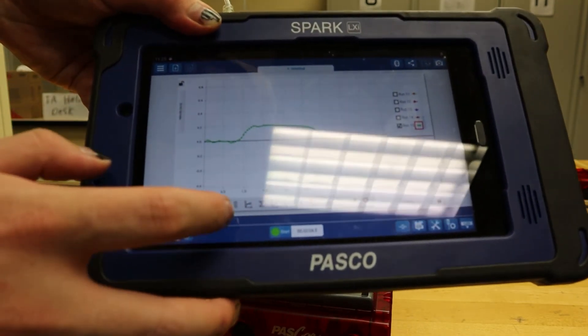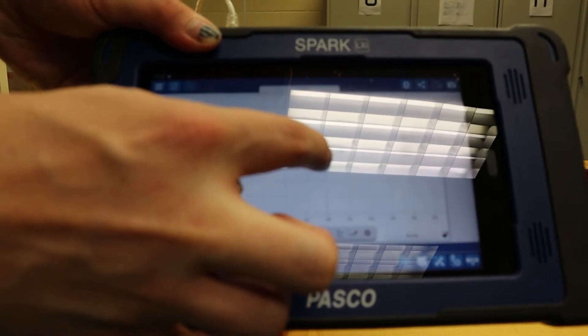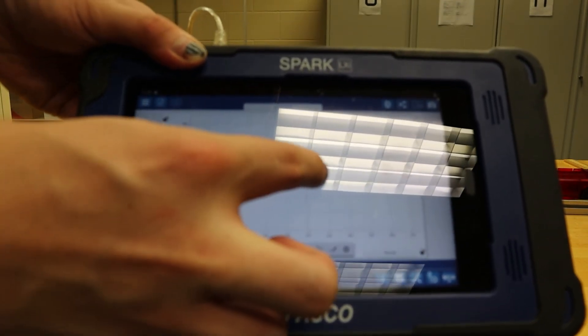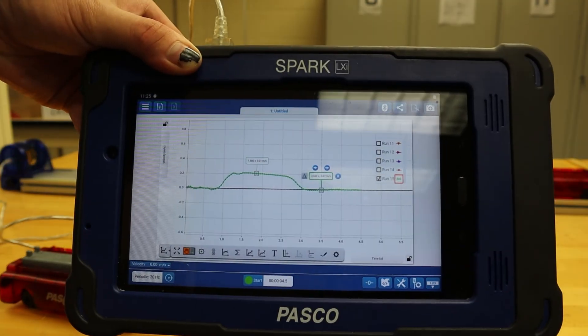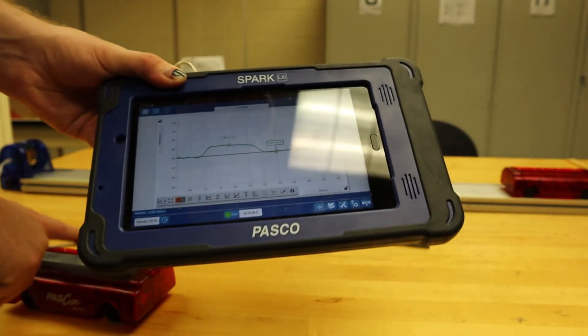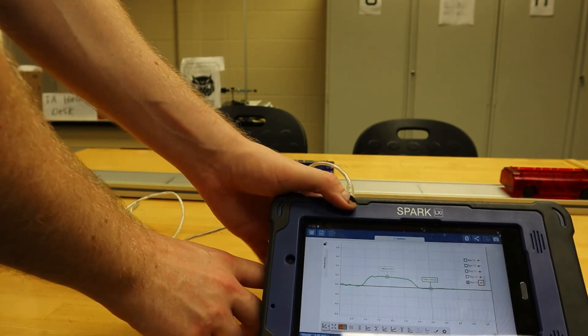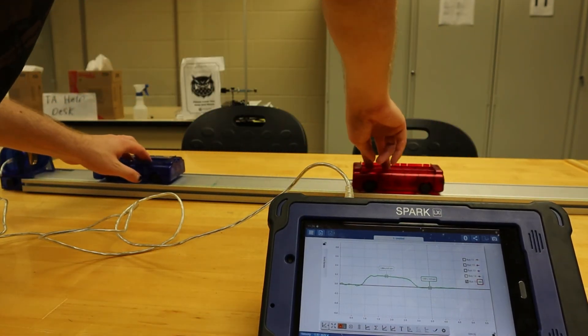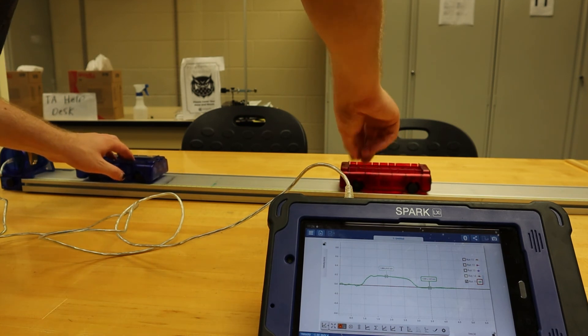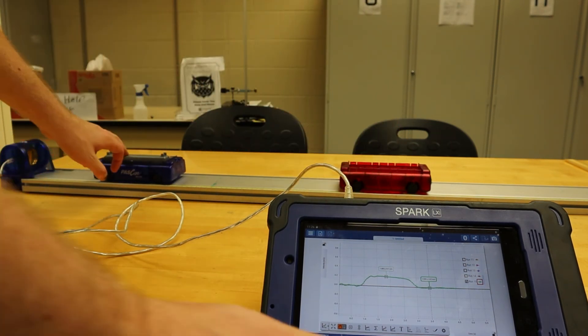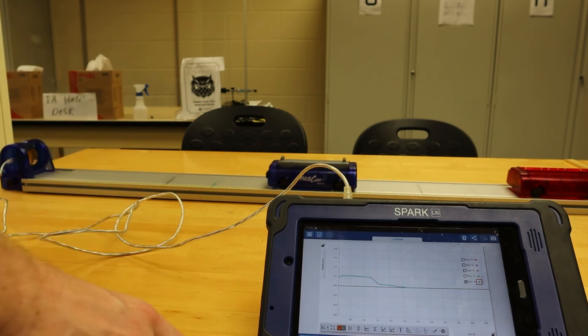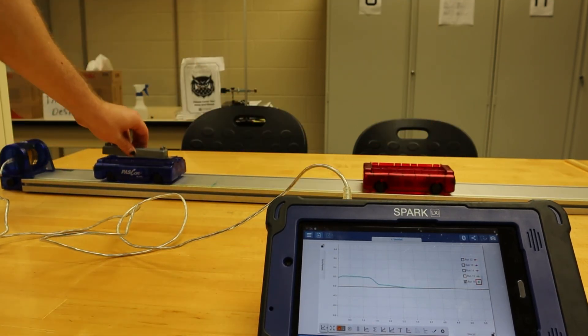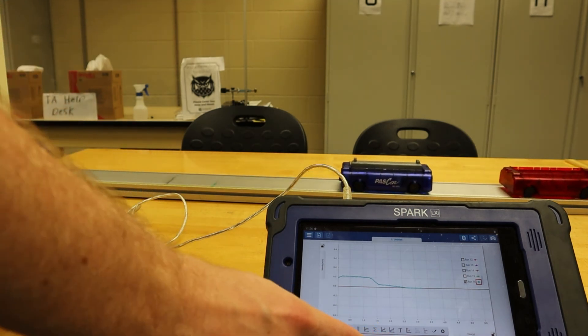Again, we should see a plateau, which will be our initial velocity, and then a flat part to the right of the graph, which will be our final velocity. Also like Part B, we will then step through all the iterations of having 0, 1, and 2 masses on both of the passcars until we have filled up the data table.